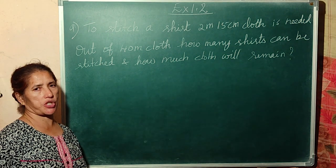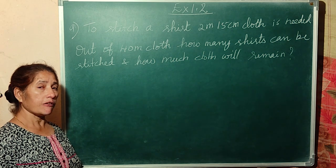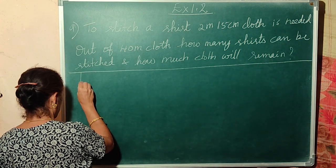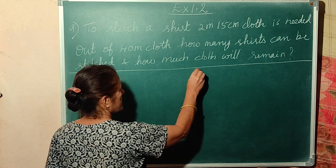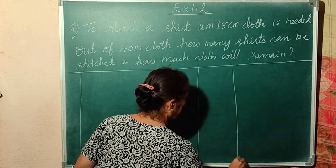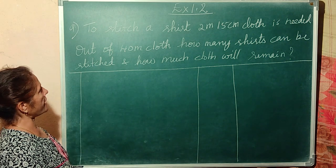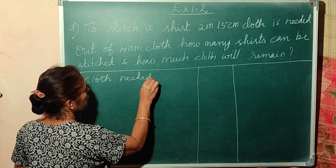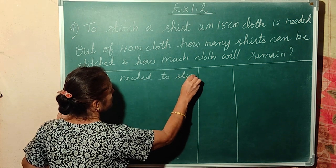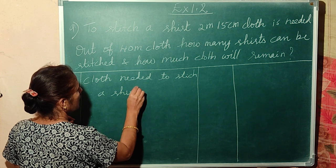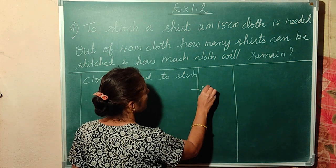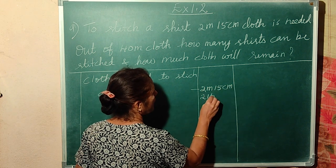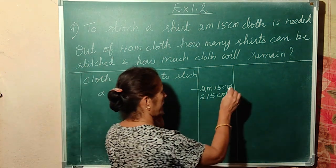Now write up the statement clearly, don't forget to draw the margin. Statement: Cloth needed to stitch one shirt = 2 meters 15 centimeters = 215 centimeters, because 1 meter equals 100 centimeters, so 2 meters is 200 centimeters; 200 plus 15 equals 215 centimeters.